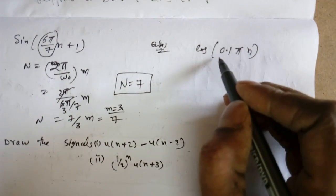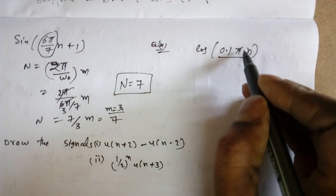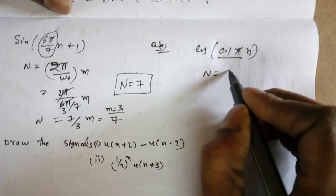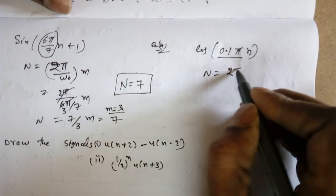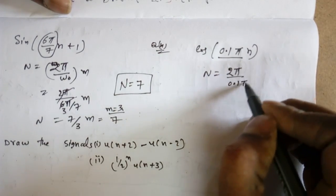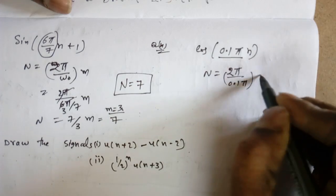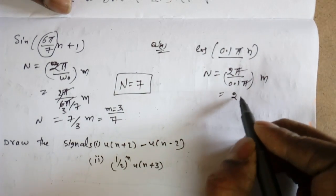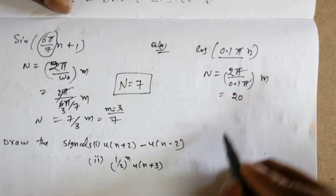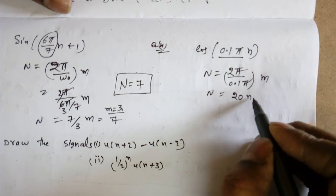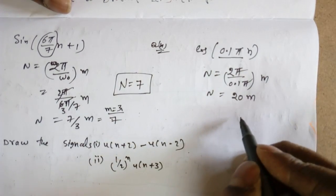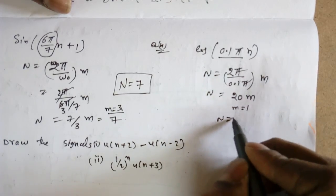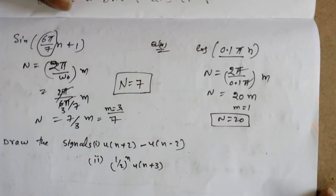To find the smallest integer N, substitute m = 3, which gives N = 7. So the time period is 7. Similarly, for 0.1π: since π is present, it is periodic. N = (2π/(0.1π))·m = (2/0.1)·m = 20·m. With m = 1, the period N = 20.